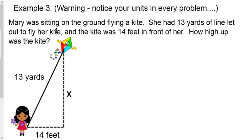The last one's a little bit more of a challenge though and I still want to remind you, hey draw the diagram if it's not given. See if you can get the distance that you need between two points as part of that triangle. And if not just be ready to move on to a different strategy just in case it's not a Pythagorean theorem. But this time I'm actually going to give you the diagram. Mary was sitting on the ground flying a kite. She had 13 yards of line let out to fly her kite and the kite was 14 feet in front of her. How high up was the kite?